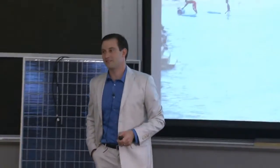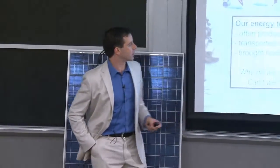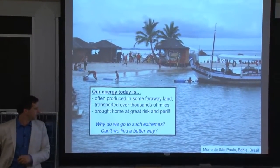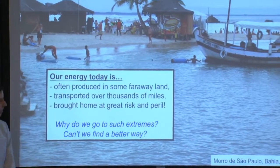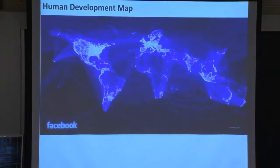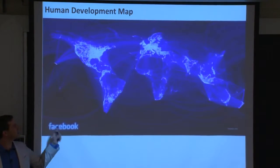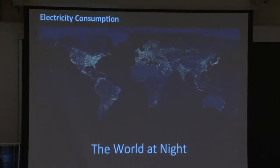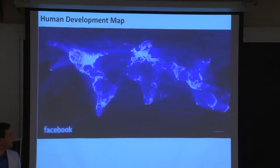The energy we use today is often produced in some faraway land, transported sometimes over thousands of miles, and brought home at significant risk and peril. The question is: why do we go to such extremes, and is there a better way? If you look at the world at night and then look at a human development map — I use Facebook as an indicator — this map shows the number of linkages between people on Facebook, where the density of bright lights represents the number of users. You can see that the two maps — electricity consumption and technology adoption — map very closely onto one another, almost down to the specific region within the specific country.